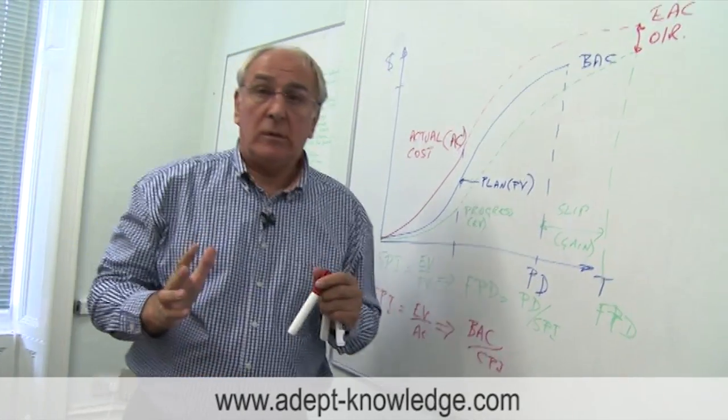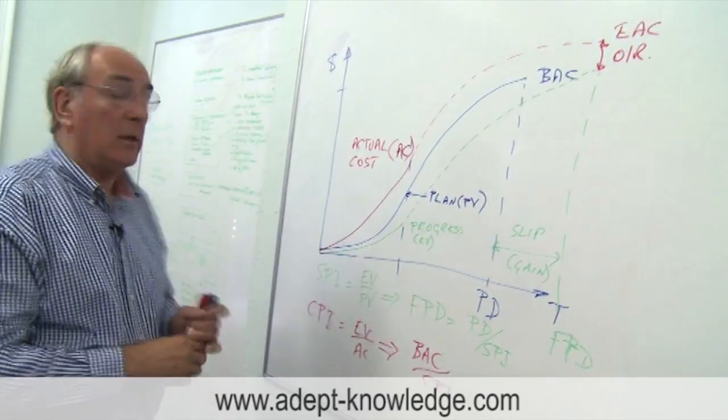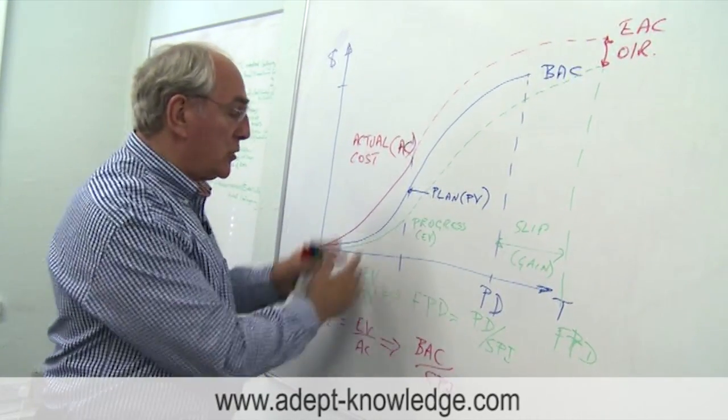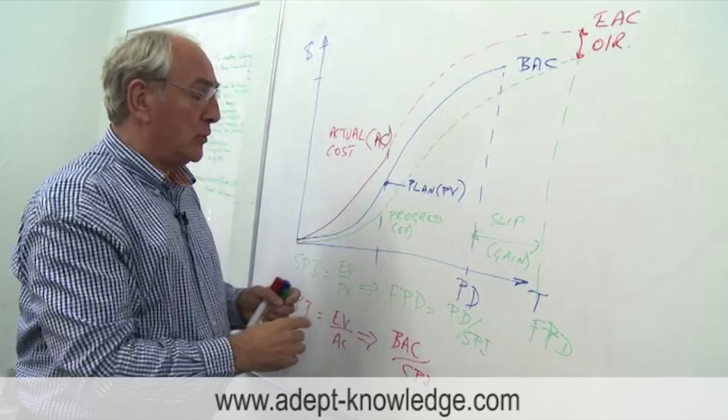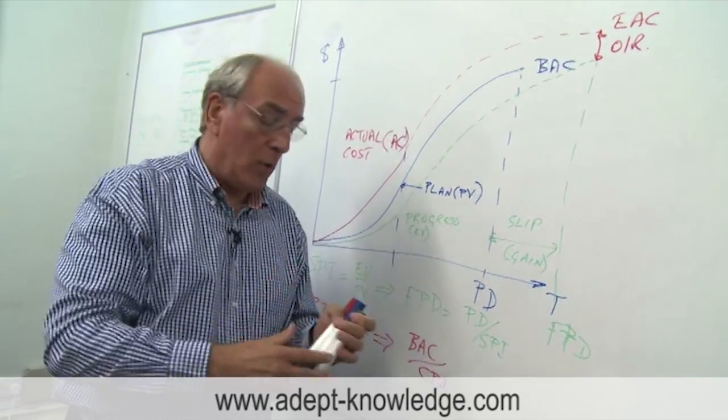There are some simple objections to this first index, the schedule performance index, and the objection to it is a philosophical one. Why use a ratio of costs or a vertical ratio when really what you want to do is to estimate something in time or horizontally?